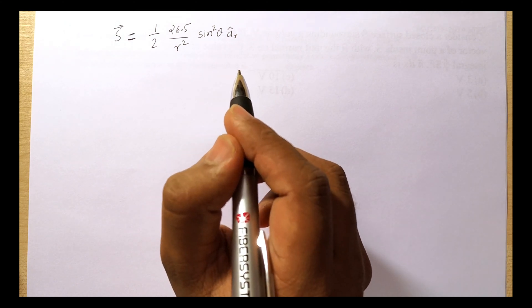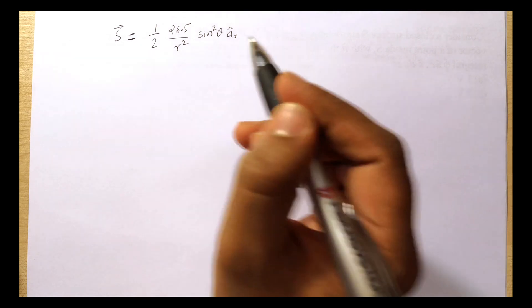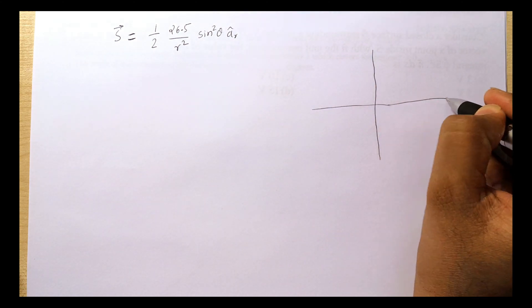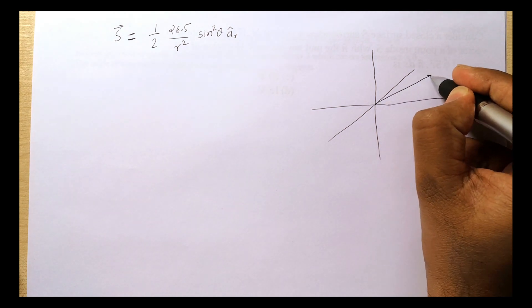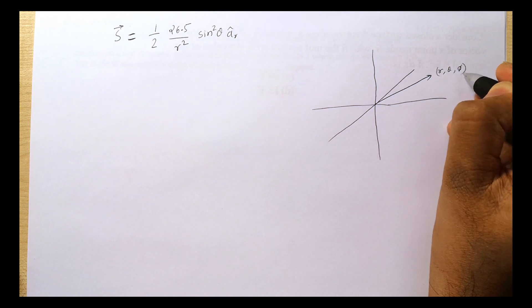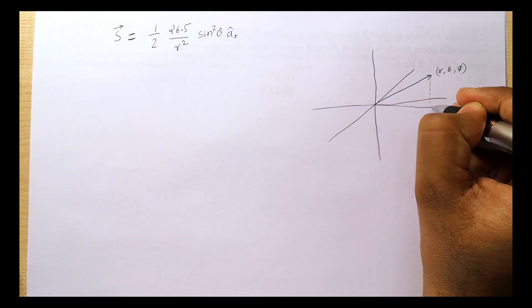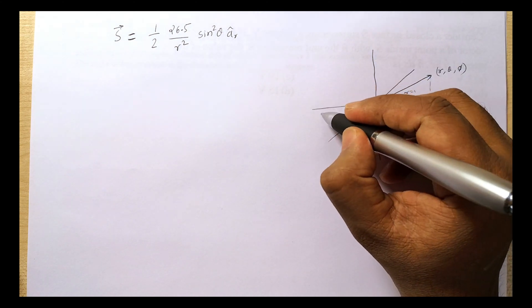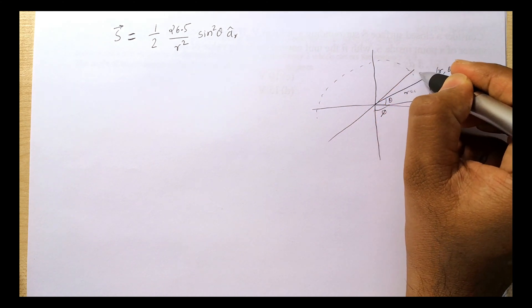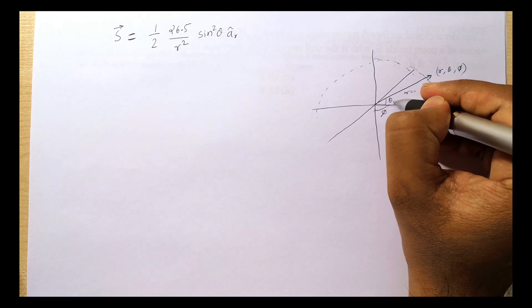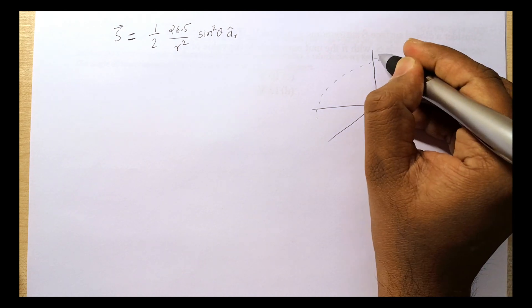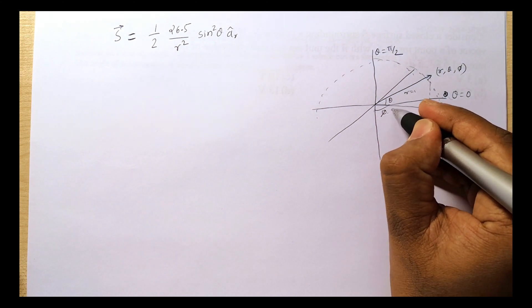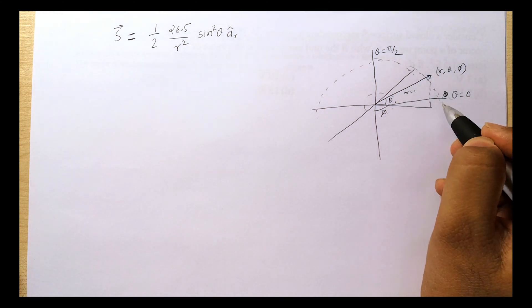The question says we have to find the average power crossing the hemispherical shell at r = 1 km with θ varying from 0 to π/2. Let me draw a small schematic. We have spherical coordinates with a vector r, θ, φ. Here r = 1 km, there is a hemispherical shell, θ varies from 0 to π/2, and the azimuth angle φ varies from 0 to 2π.